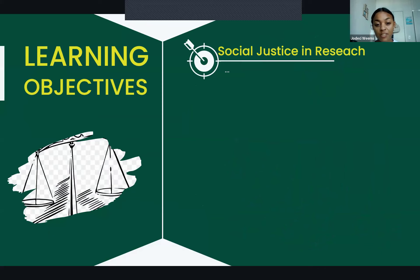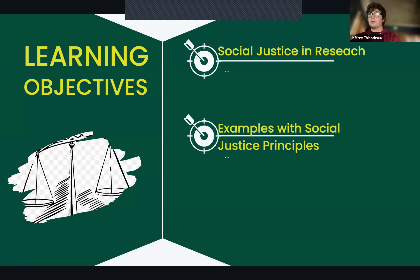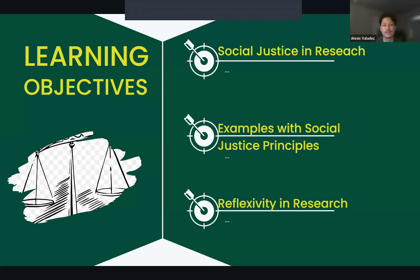Now let's take a look at our learning objectives for today's discussion on ethics and research. Understanding social justice in research: we'll learn how to define social justice in research, promote fairness, address social inequalities, and recognize the importance of maintaining objectivity, especially when emotionally invested in topics like climate change. Incorporating social justice principles: we'll discuss how to ensure diverse representation in research and understand the potential impact on marginalized groups. And practicing reflexivity in research: exploring how self-awareness can improve research quality and address the power dynamics that influence ethical research.